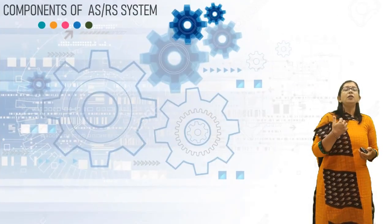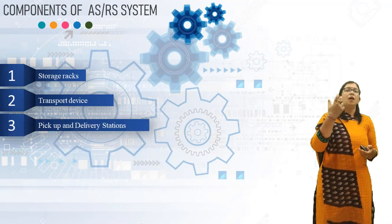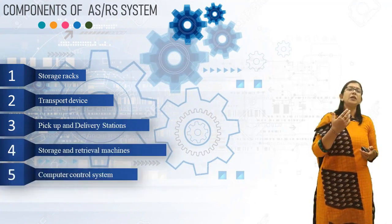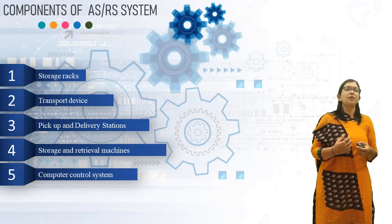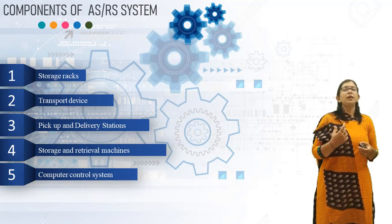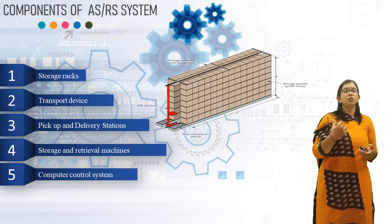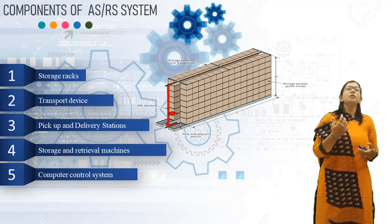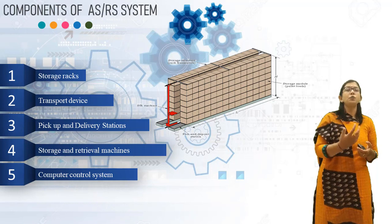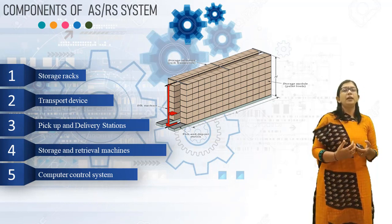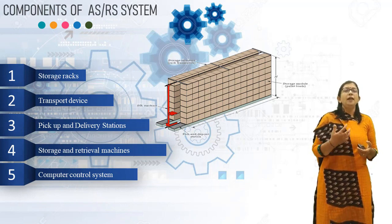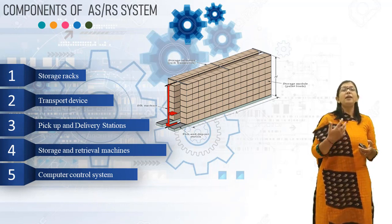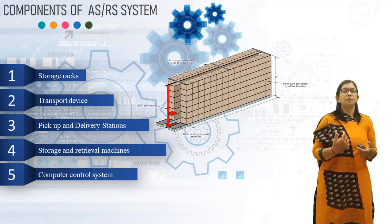Now, what are the components of the ASRS system? The first component is the Storage Rig or Storage Structure. The ASRS contains several rows of storage rigs for storing material items. The storage structure of ASRS is much taller — approximately 30 meters — compared to conventional storage and retrieval systems.